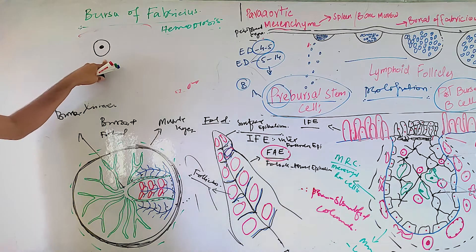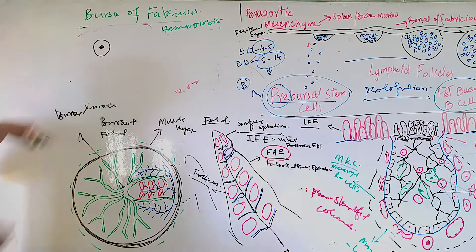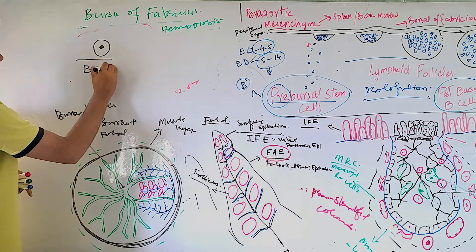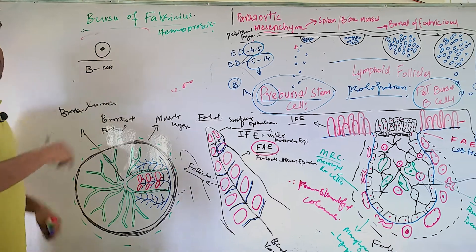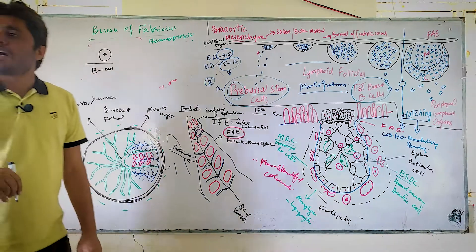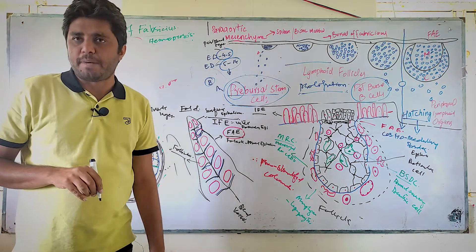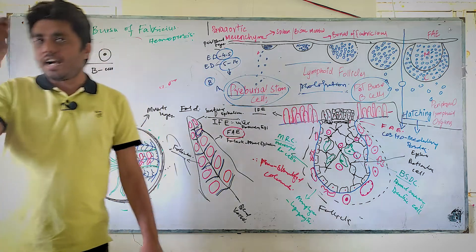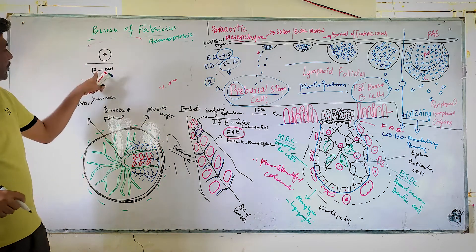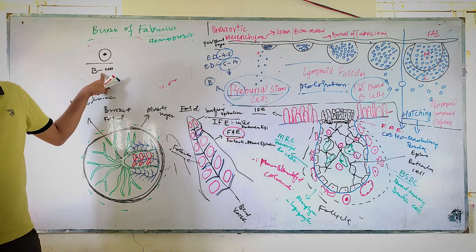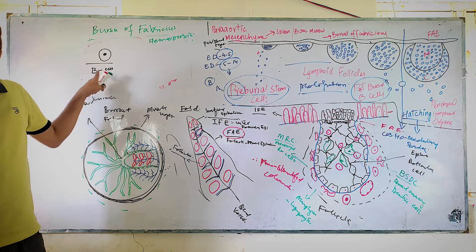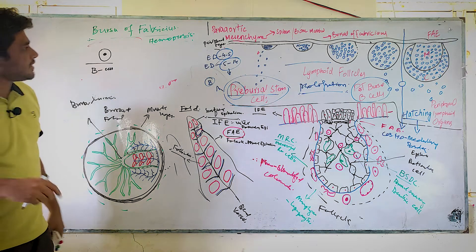B cells were first described in the Bursa — that is why they are called B cells: B for Bursa. They were first discovered in the Bursa of Fabricius.